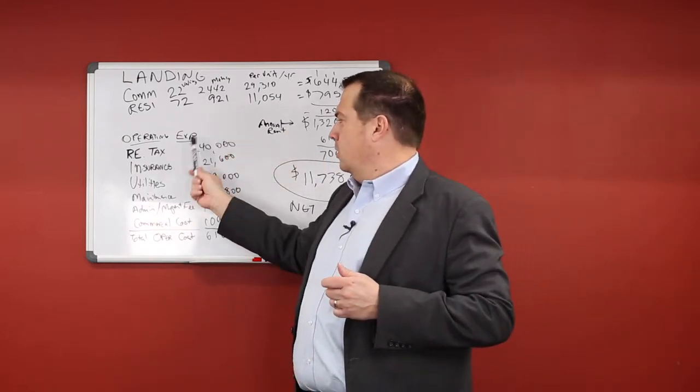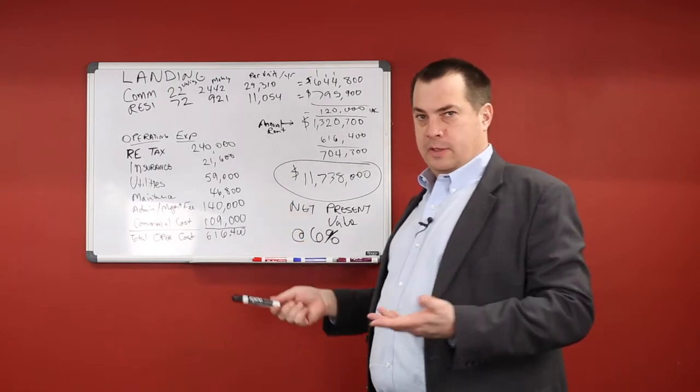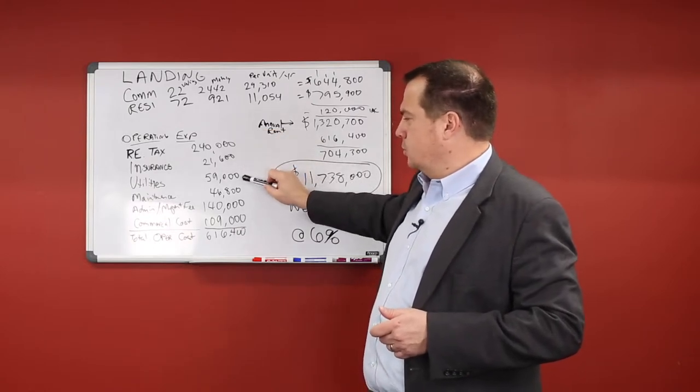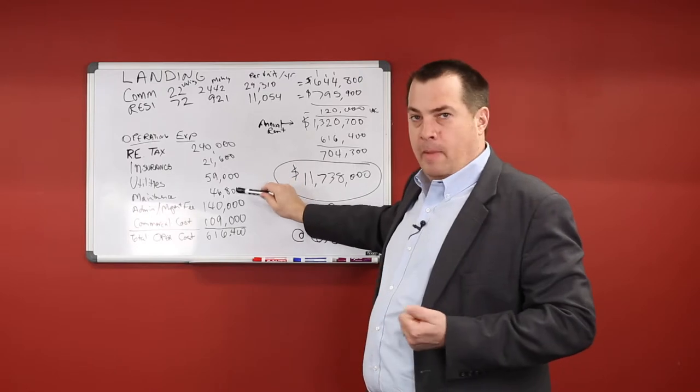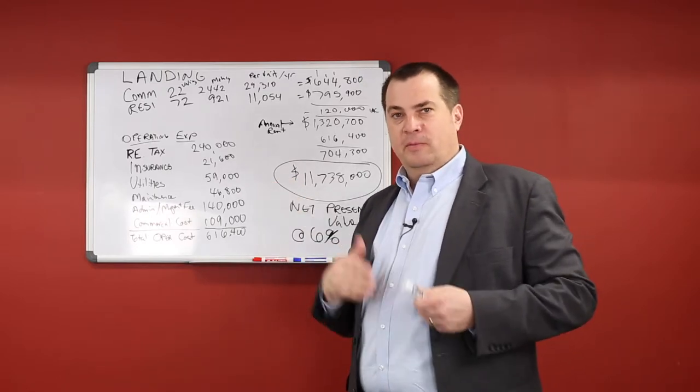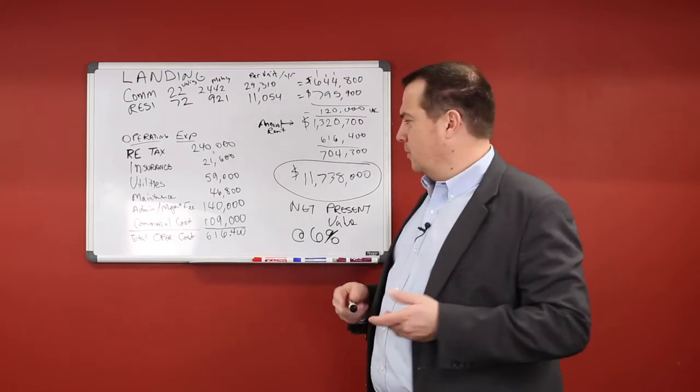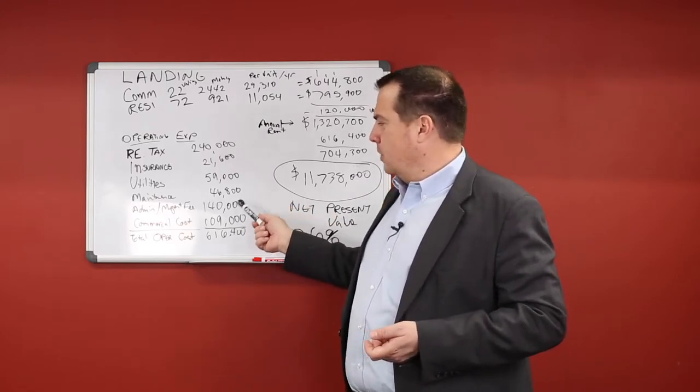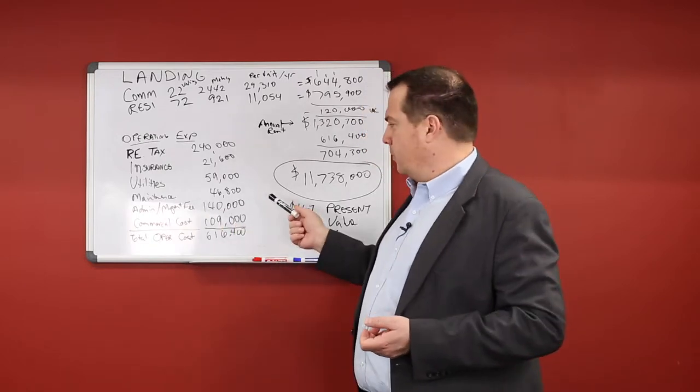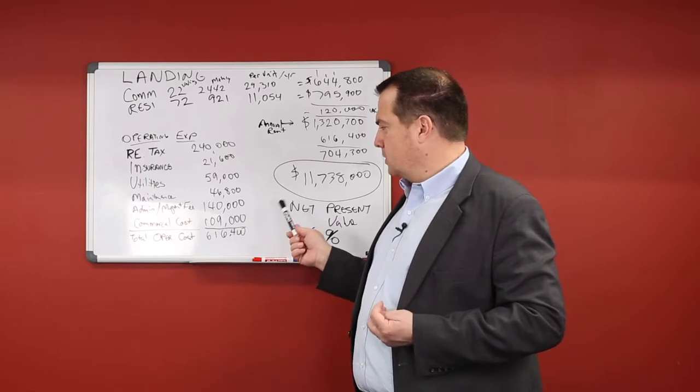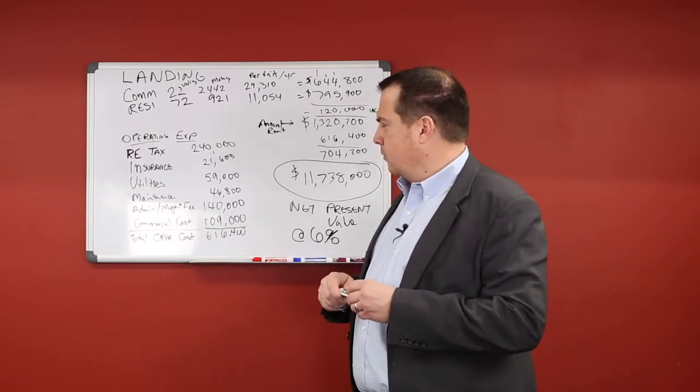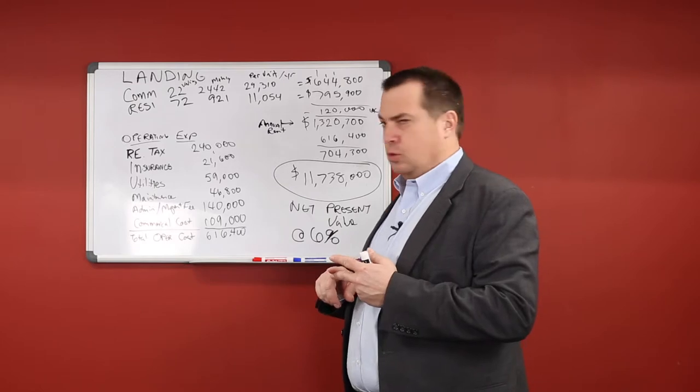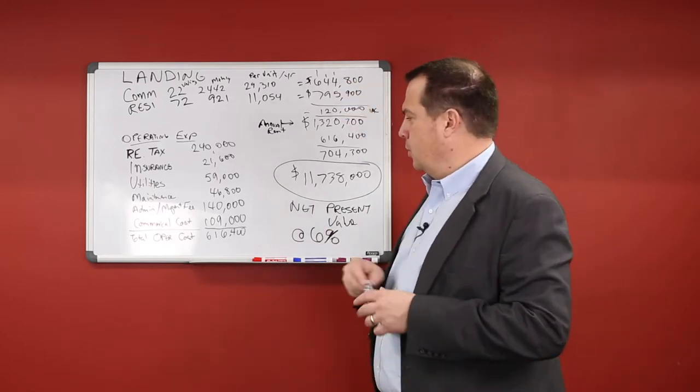Then on the expense side, the biggest item would be real estate tax. If you were to sell this and you didn't have abatements or anything like that, the real estate tax was a big item on there. Then you've got insurance, utilities plus water, annual maintenance. You're going to reserve money each year to replace the roof eventually and replace windows, all the different maintenance stuff that goes into owning a building. Administration, management fees, so they were planning on having staff there, a few different employees. That was a total of $140,000 a year. The commercial costs would be things like advertising,